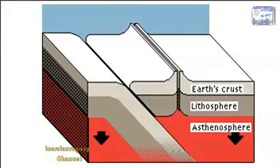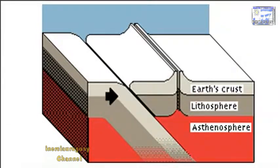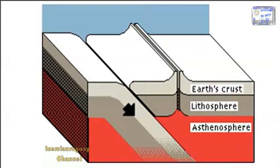Material in the asthenosphere eventually cools, becoming more dense. It then sinks, carrying parts of the lithosphere with it. This process is known as subduction.